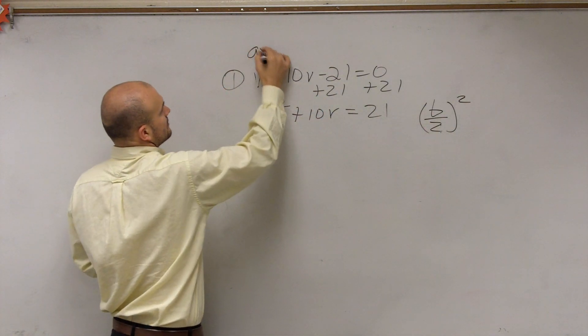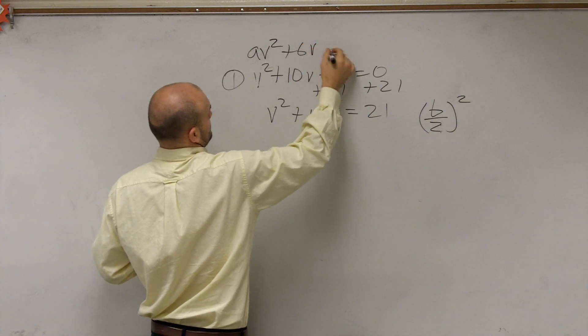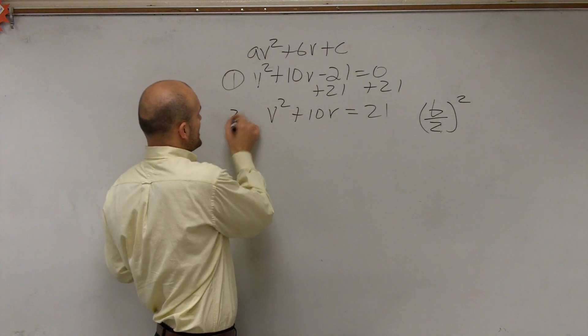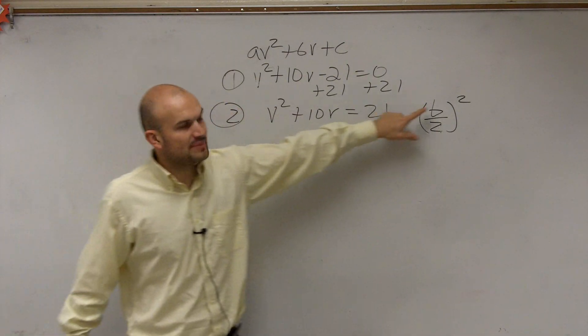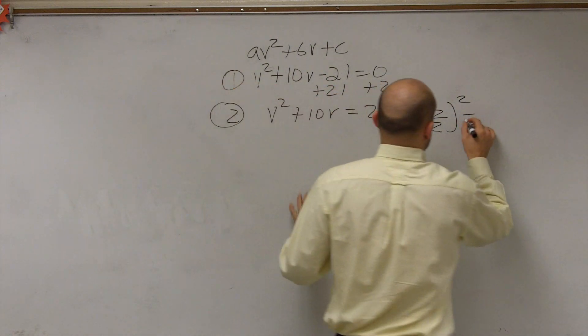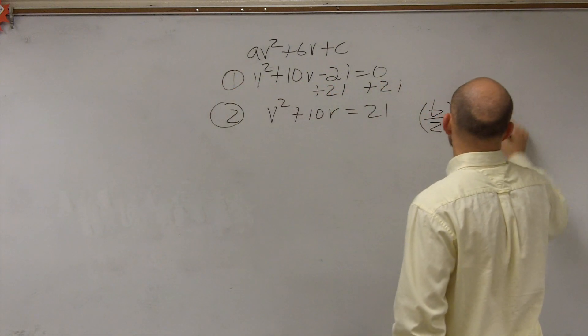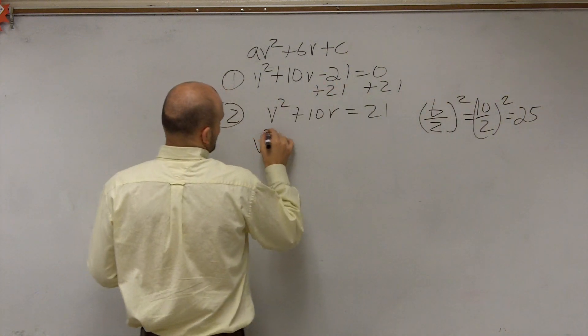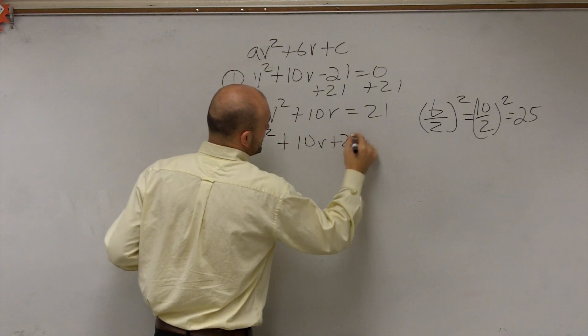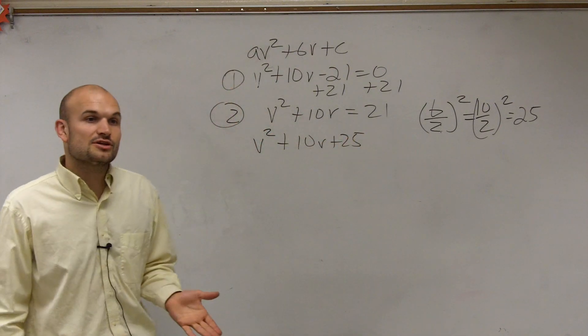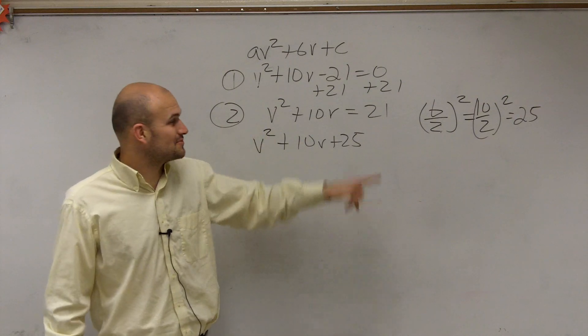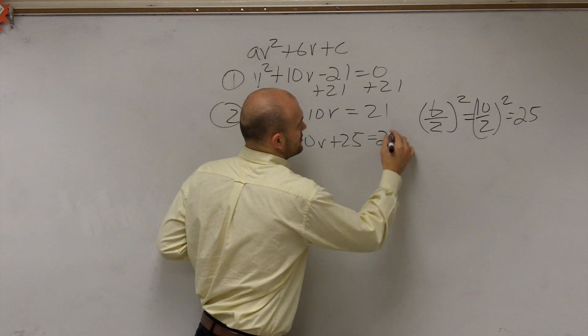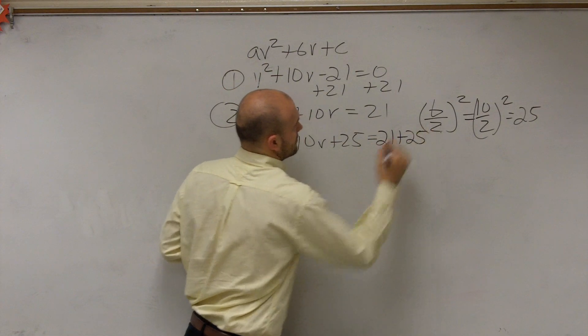So what we need to do is take our B divided by 2 and square it. Remember, B is going to be your coefficient of your linear term. So step number two now is to take B divided by 2 and square it. Well, that becomes 10 divided by 2 squared, which equals 25, right? Now, 10v + 25. But remember, ladies and gentlemen, this is an equation. So this is where Pedro remembered. He's like, oh crap, because once you add 25 to the left side, you have to make sure you add 25 to the right side.